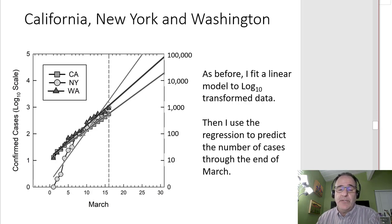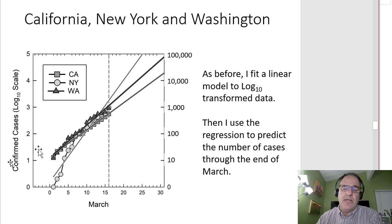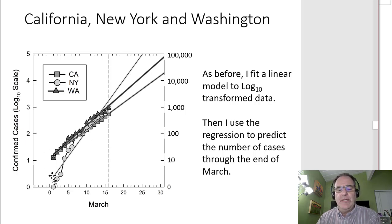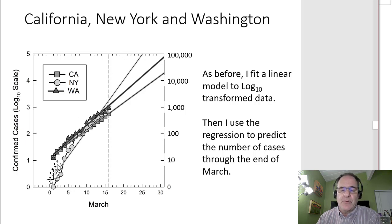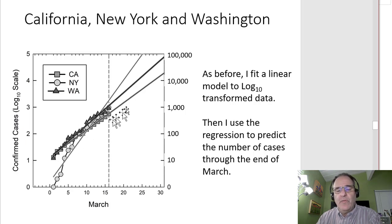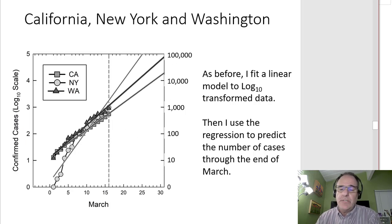We put this in a log 10 scale so that we would expect a linear relationship if the actual relationship was exponential. When we fit a straight line to those data, we are making an assumption that it's a good fit — it's imperfect, but it's actually not too bad and it's a good place to start. So this shows the linear models fit to those three states, with three different predictions going out through the end of March, and we see very big differences in the predicted rate of spread.